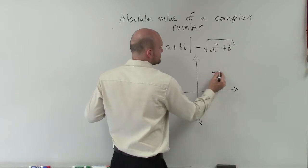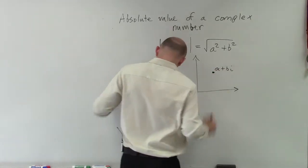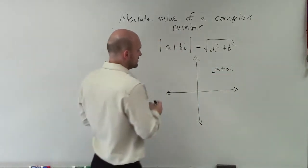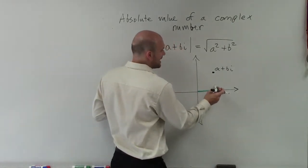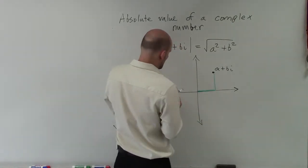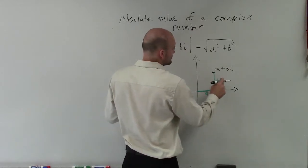Let's pretend I have a point, and we call that a plus bi. From that point, we have our real part, and then we have our bi. So we could call this a, and this will be bi.